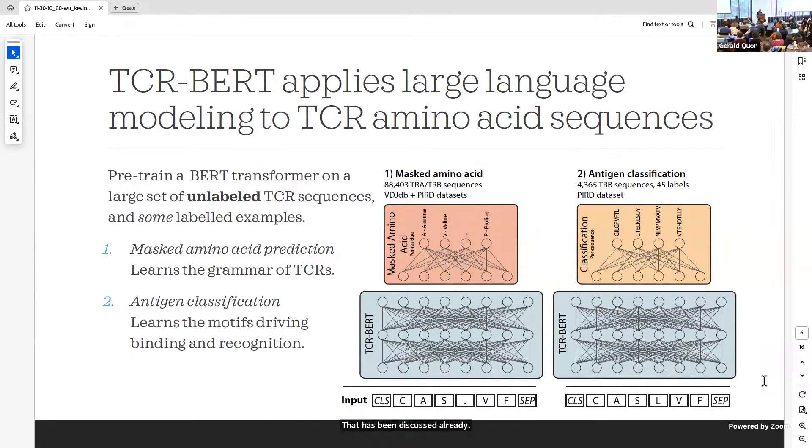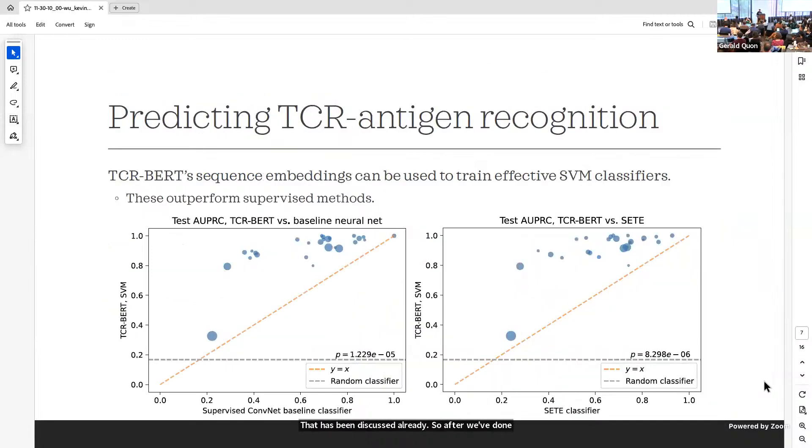After we've done this combination of two pre-training tasks, we want to see does this actually make any difference. Does this do better than existing models? The first thing to ask is, does this do better than supervised modeling? The way we run this evaluation is we take a set of antigens, take each antigen, remove its data from training, retrain this model, and then take that resulting model and evaluate on that held-out antigen to make sure we're not bleeding training and test set. We run this evaluation for many antigens.